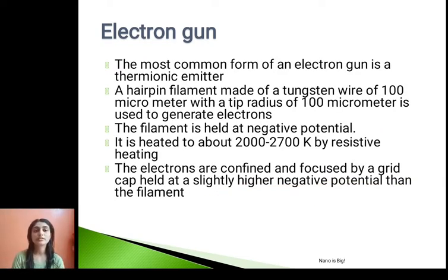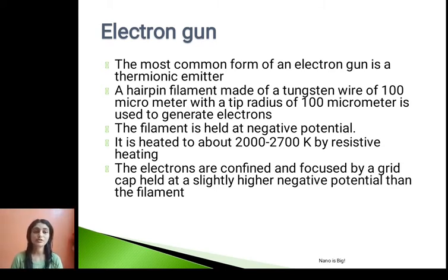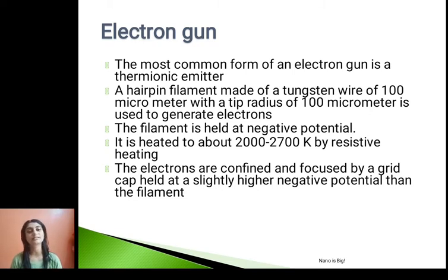The most common form of an electron gun is a thermionic emitter. In a thermionic emitter, when you supply heat energy, at the output you get electrons. A hairpin filament made up of a tungsten wire of around 100 micrometers with a tip radius of around 100 micrometers is used to generate electrons. The filament is held at negative potential and is heated to about 2,000 to 2,700 Kelvin by resistive heating. The electrons are confined and focused by a grid cap held at a slightly higher negative potential than the filament.